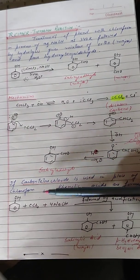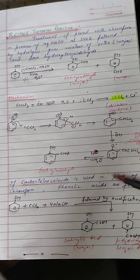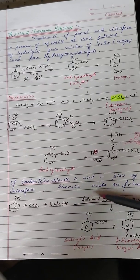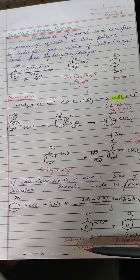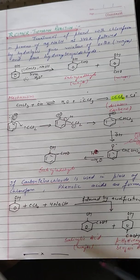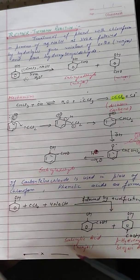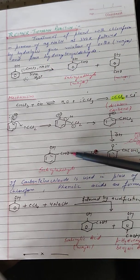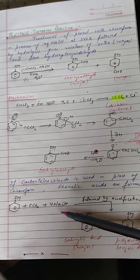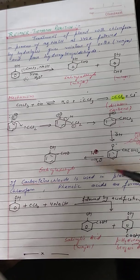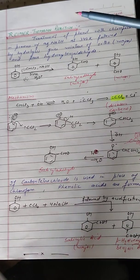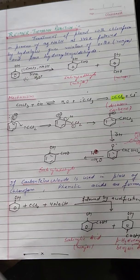This is how we obtain salicylaldehyde. If instead of chloroform, carbon tetrachloride is used, phenolic acids are formed instead of aldehydes — the major product in that case being salicylic acid and para-hydroxybenzoic acid. So, using chloroform introduces a CHO group in the ring, while using carbon tetrachloride introduces a COOH group. This completes the Reimer-Tiemann reaction and all the chemical reactions of phenols in your syllabus.